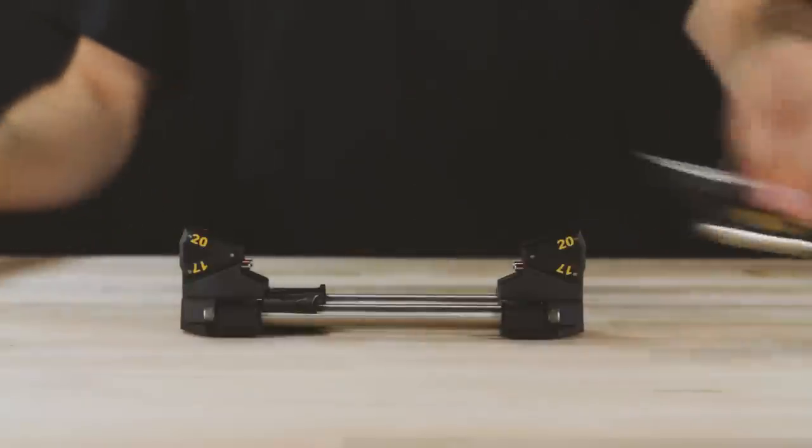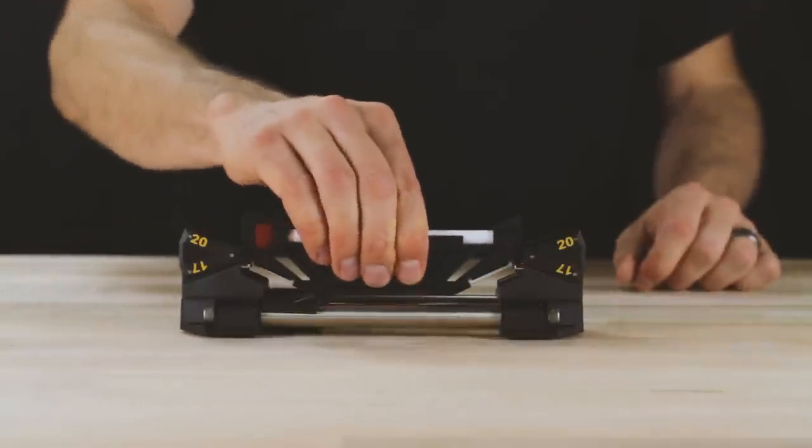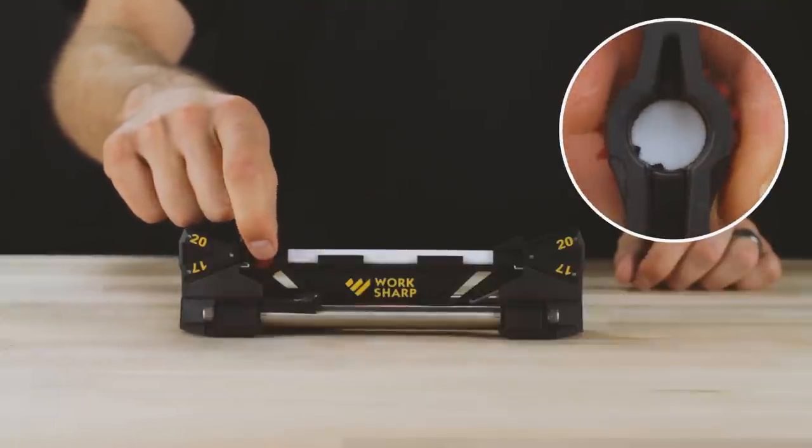To sharpen recurve blades, install the ceramic hone into the sharpening platform. Set the ceramic hone to the coarse setting.